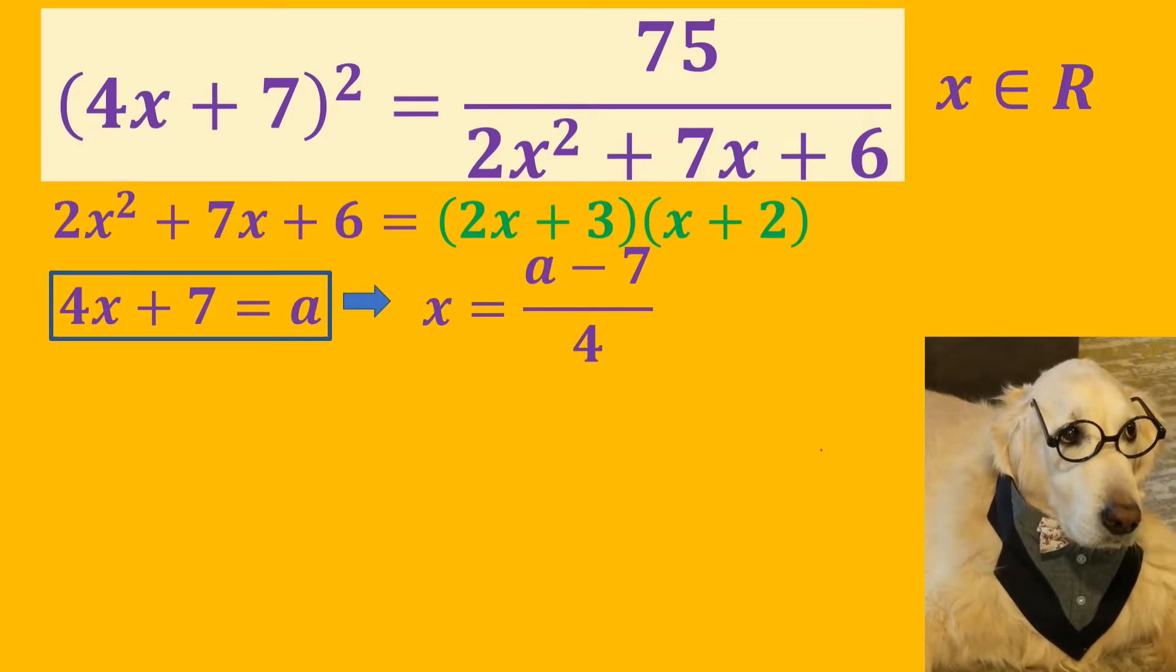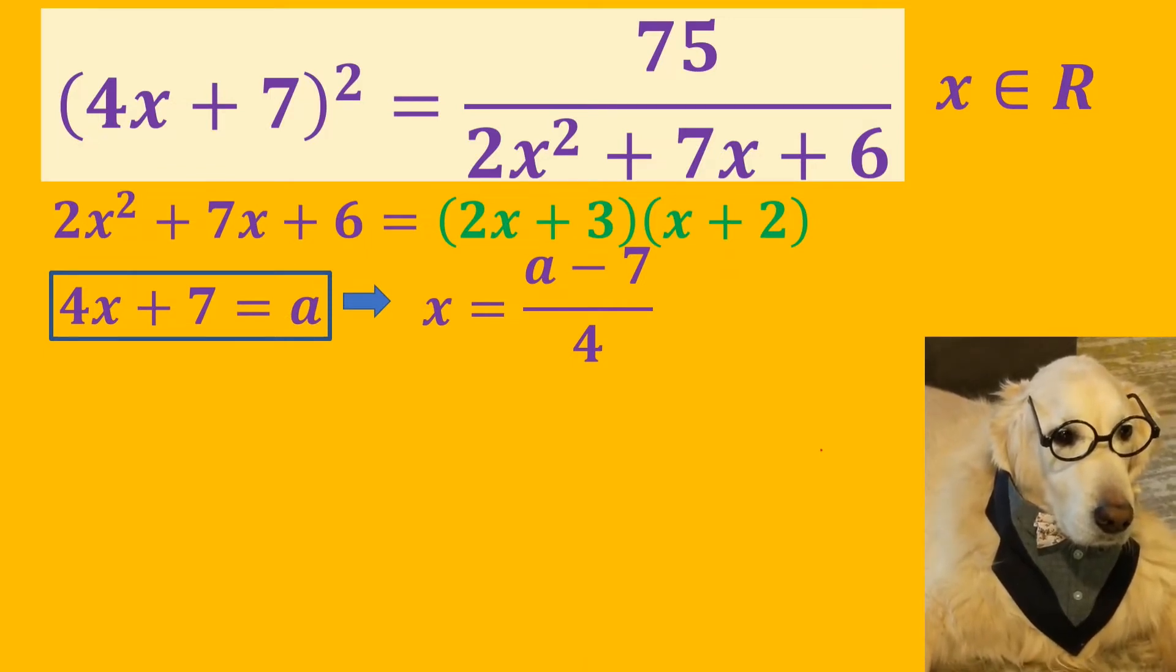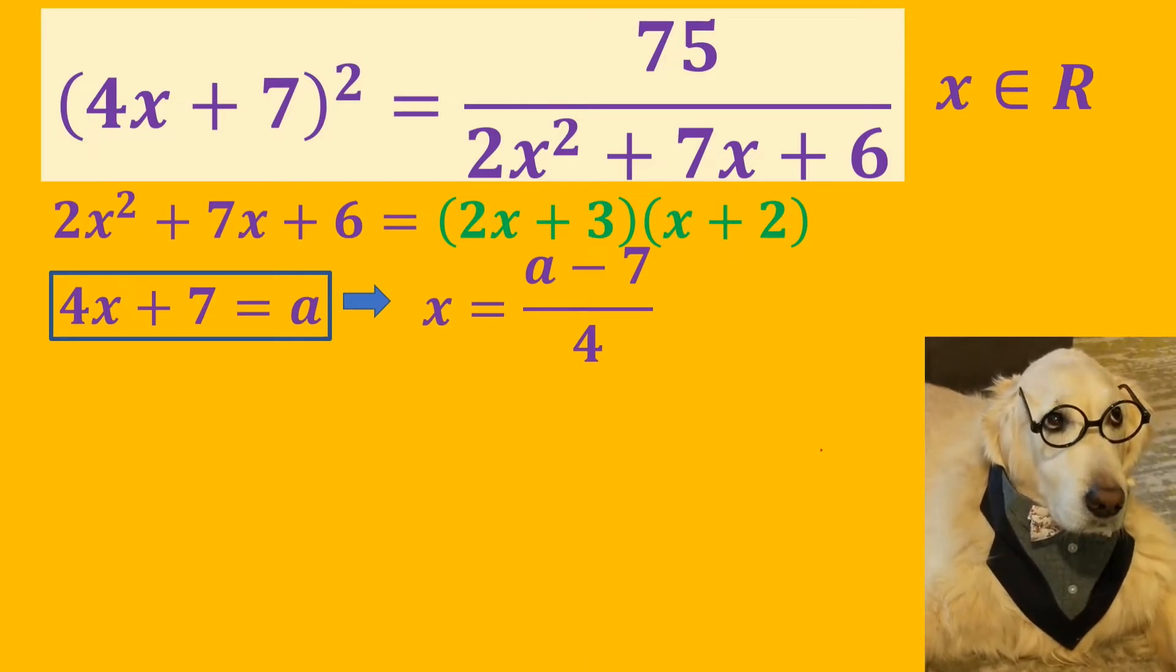Let's equate 4x + 7 to a. Then we get x as (a - 7)/4.